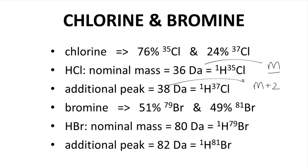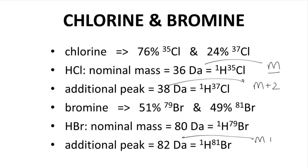Bromine also has a similar pattern. Bromine has two isotopes — bromine-79 and bromine-81 — with almost equal abundance, though bromine-79 is slightly more abundant. In HBr, the nominal mass of the parent ion is 80, but the signal at M+2 is almost the same intensity. This one-to-one ratio of two peaks separated by two mass units is a sign of a bromine atom in a molecule.